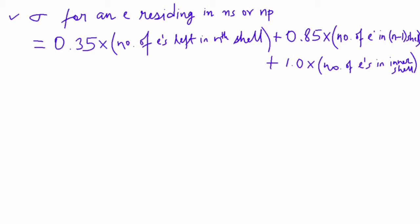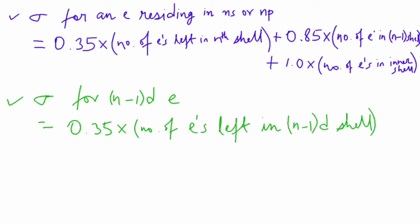Next, the value of sigma for an electron residing in n minus 1 d orbital. The remaining electrons present in n minus 1 d electrons make a contribution of 0.35 to the value of sigma and rest electrons present in n minus 1 s, n minus 1 p and other inner shells make a contribution of 1.0 to the value of sigma.